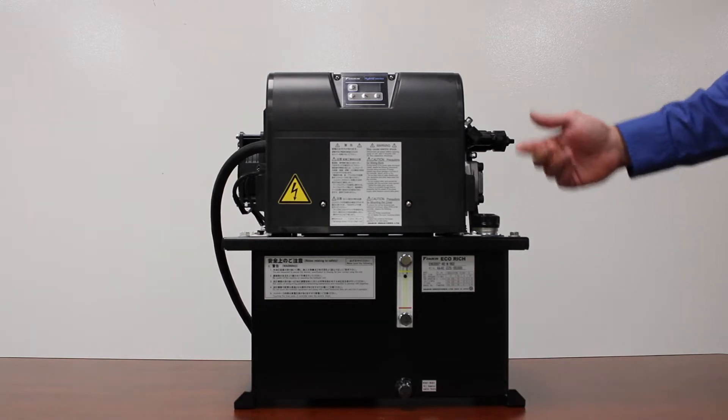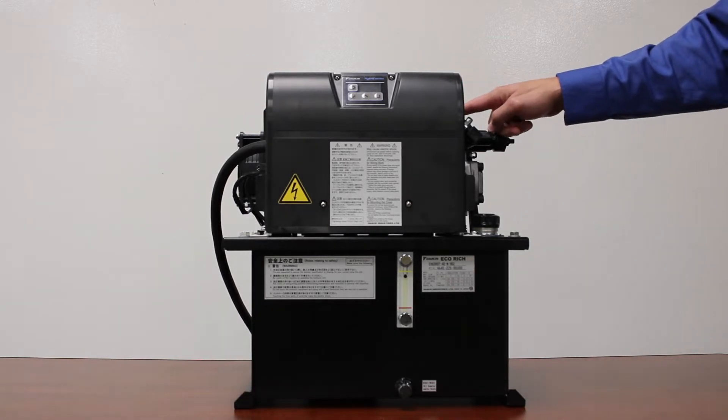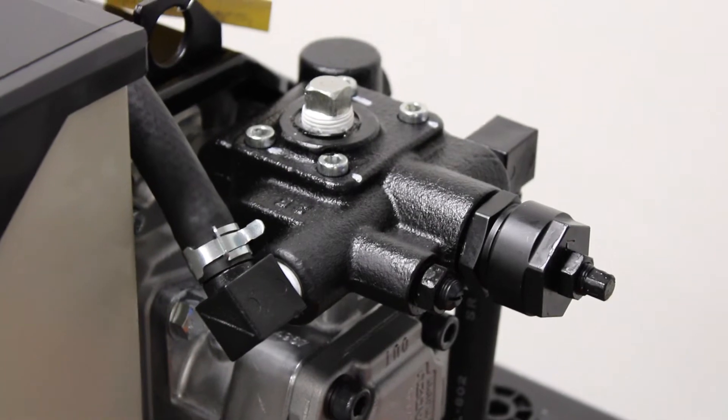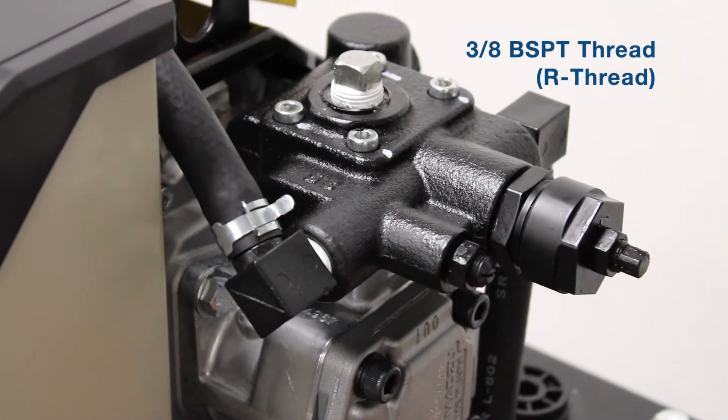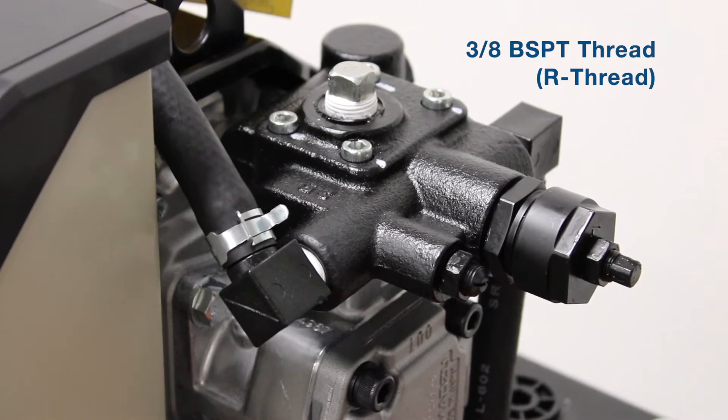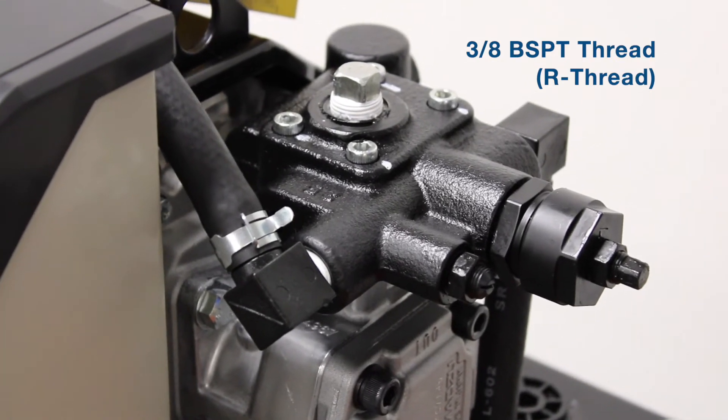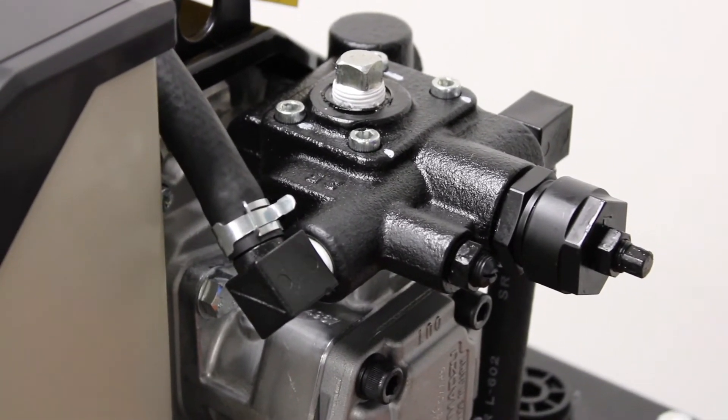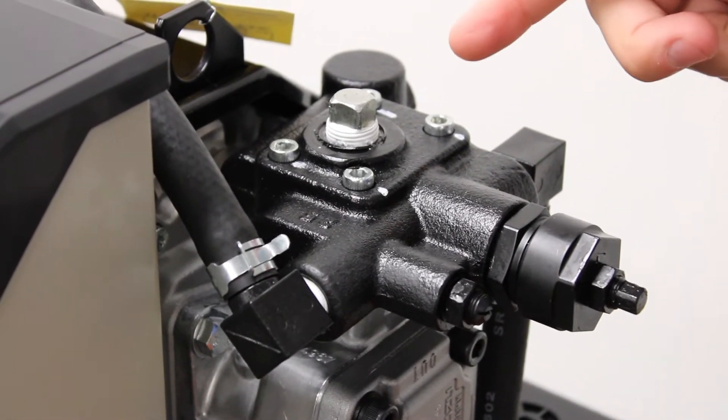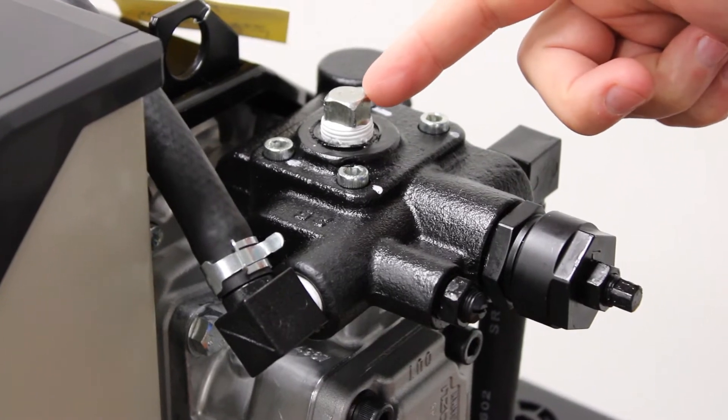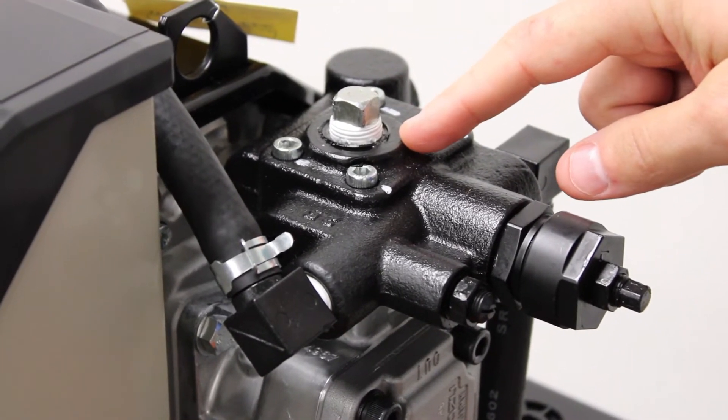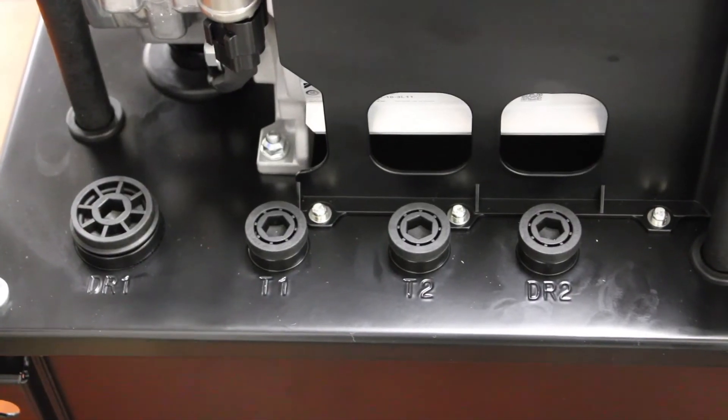Once we've filled up our tank with oil through the fill, we'll connect our pressure and return lines to our application. The pressure port is right here on the top. This is a three-eighths BSPT thread, also known as British Standard Pipe Taper thread, commonly referred to as an R thread. That's important because we're going to be talking about 1000 psi, so we want to make sure we have the right fitting and we'll connect right off the head of the pump.